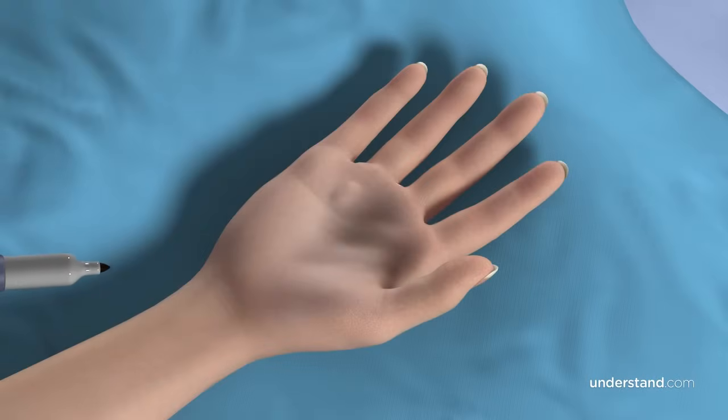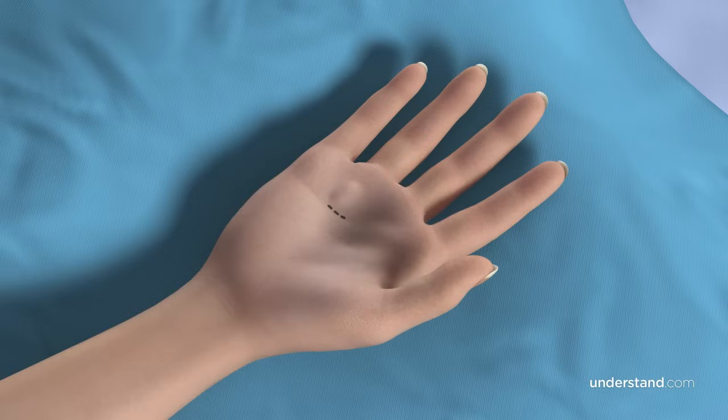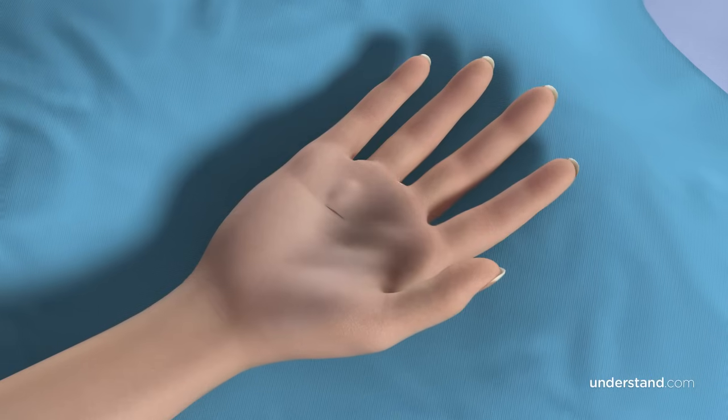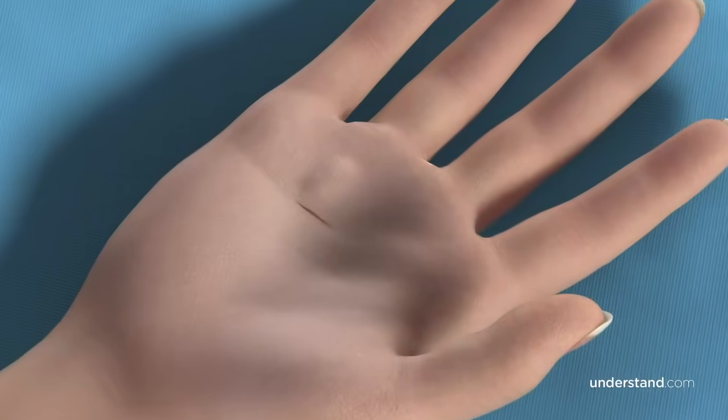Your hand will be positioned palm up and will be marked for the procedure. The incision location varies depending on the finger affected and the surgeon's preference. A small incision is made in the skin. Regardless of the location and orientation of the incision, in most instances, there is minimal scarring at the incision site.